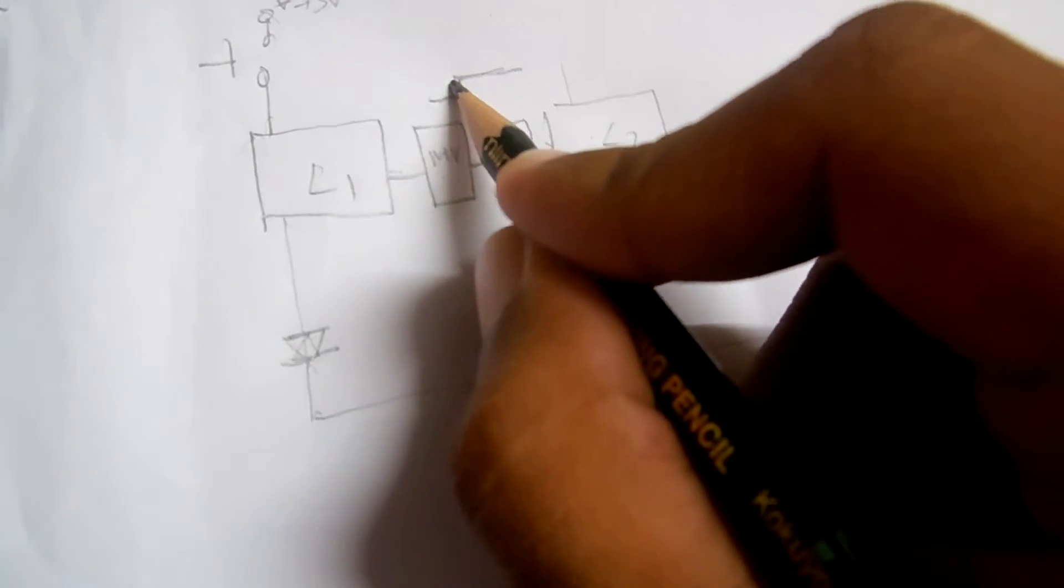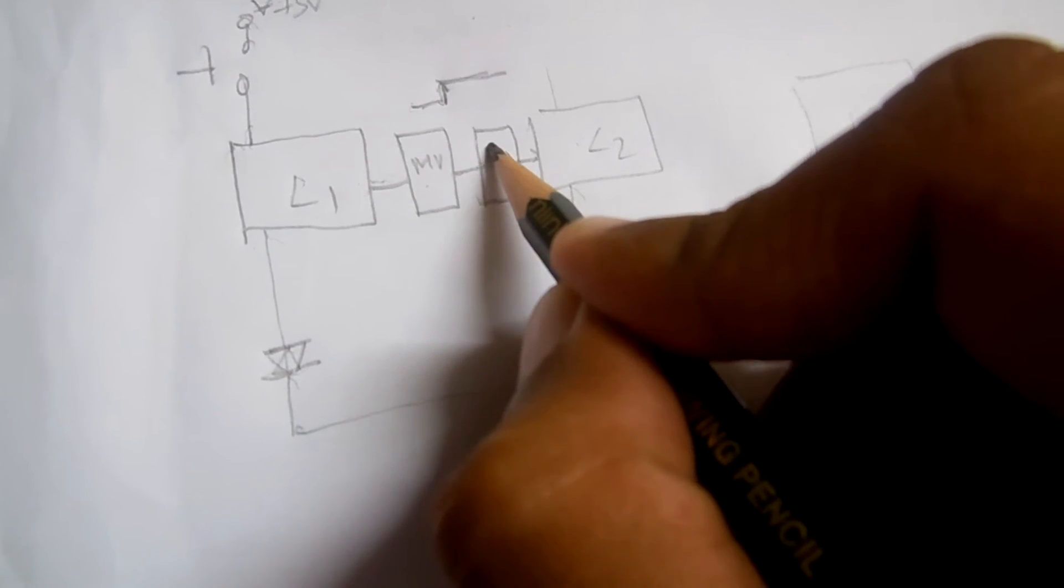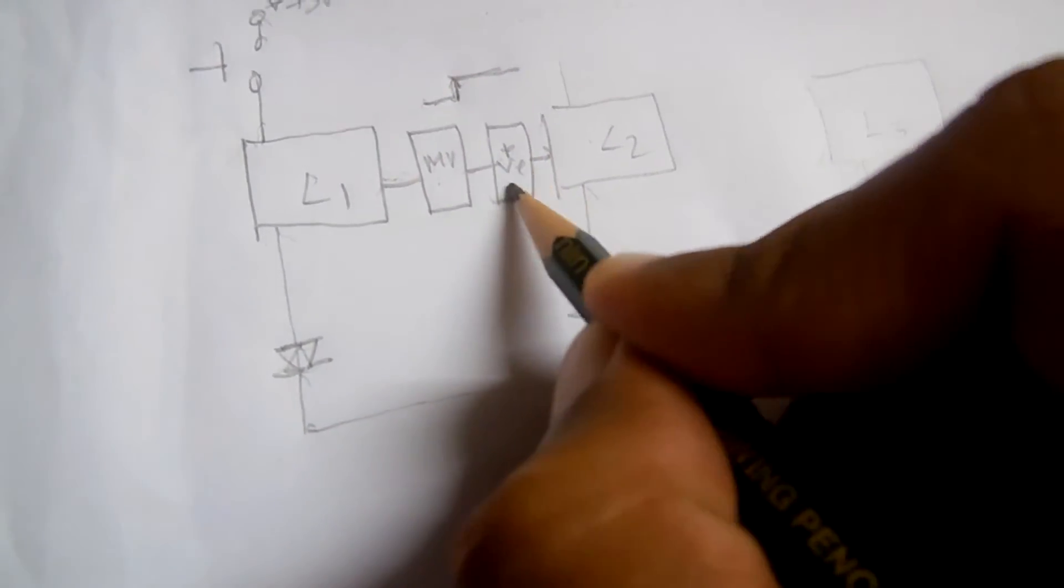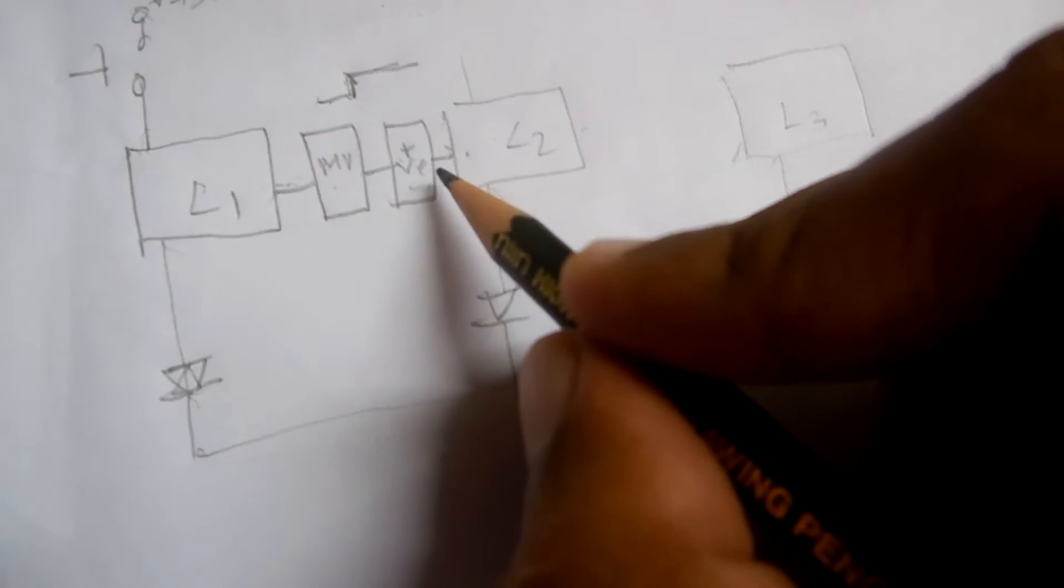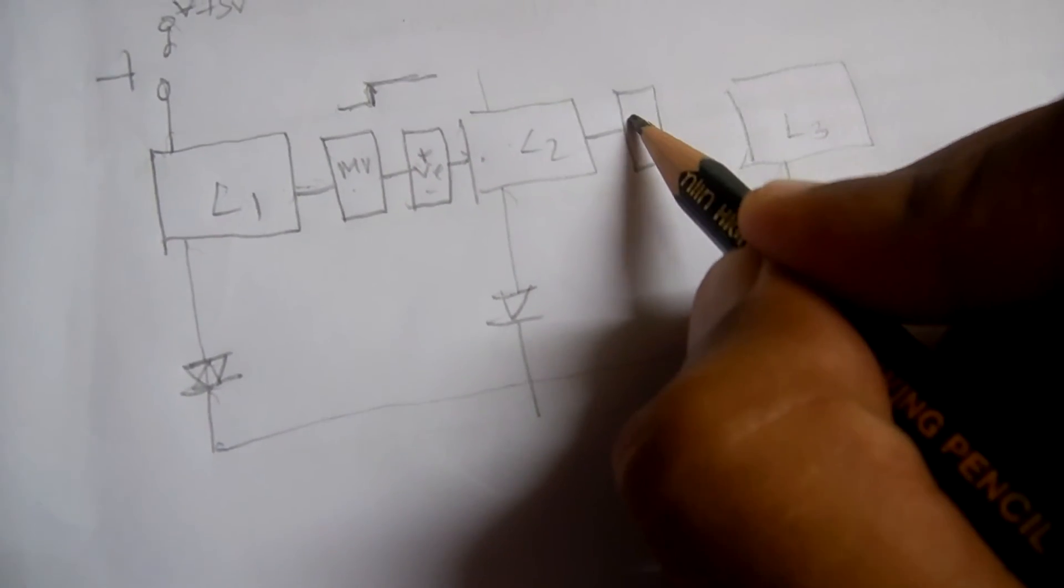So when it rises, this edge is detected, and this positive edge trigger turns on this latch. The same blocks are repeated: multivibrator, positive edge trigger, again goes to this latch.